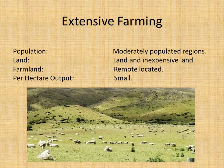For extensive farming, the population is often found in less populated regions. The land is very inexpensive and remotely located — these pieces of land are very far away and not very accessible. For that reason, they have to be quite large pieces of land to keep everything running. Per hectare output is small, so they have these massive pieces of land but what they're producing is not very large.